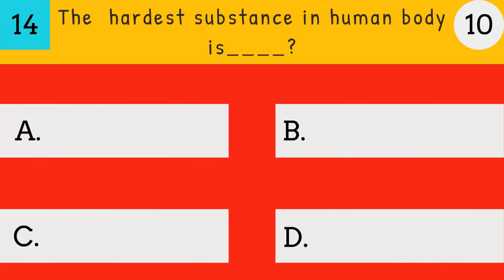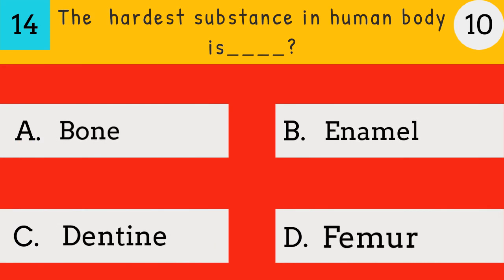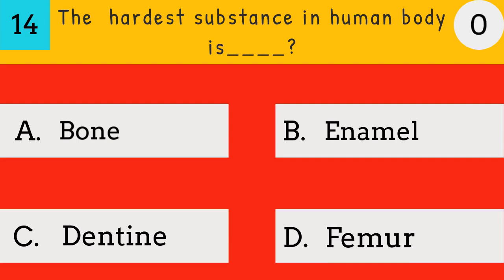The hardest substance in the human body is: Bone, Enamel, Dentine, Femur. Answer: Enamel. The hardest substance in the human body is Enamel.